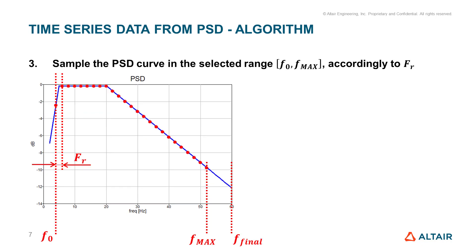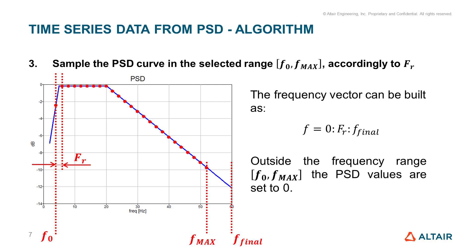The third step is to sample the PSD curve in the selected range. The sampling step is given by the frequency resolution. We can also easily build the frequency vector and assign a PSD value equal to zero to those frequencies which are outside of our frequency range.